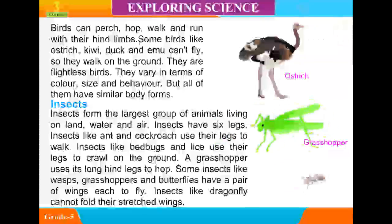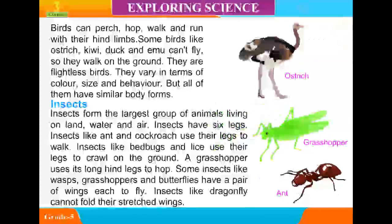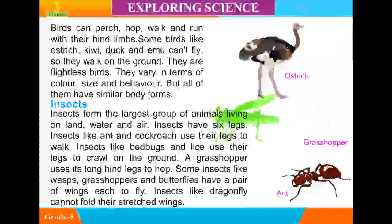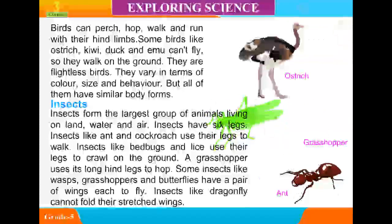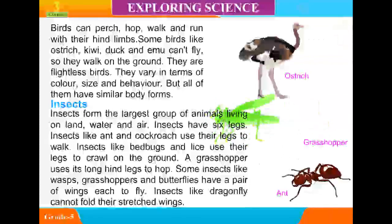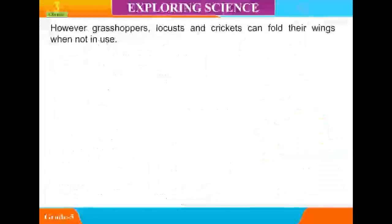Insects: Insects form the largest group of animals living on land, water, and air. Insects have six legs. Ants and cockroaches use their legs to walk, while bed bugs and lice use their legs to crawl. A grasshopper uses its long hind legs to jump. Some insects like wasps, grasshoppers, and butterflies have wings to fly. Dragonflies cannot fold their stretched wings, whereas grasshoppers, locusts, and crickets can fold their wings when not in use.